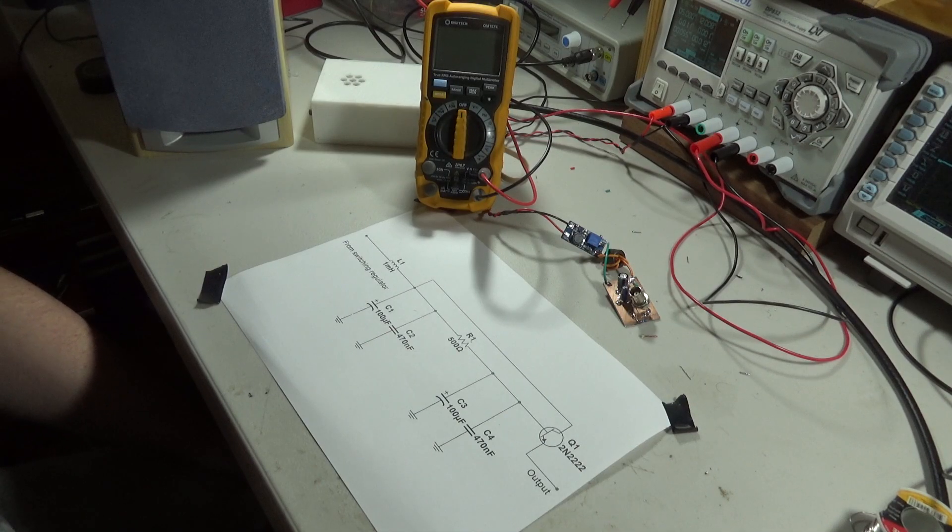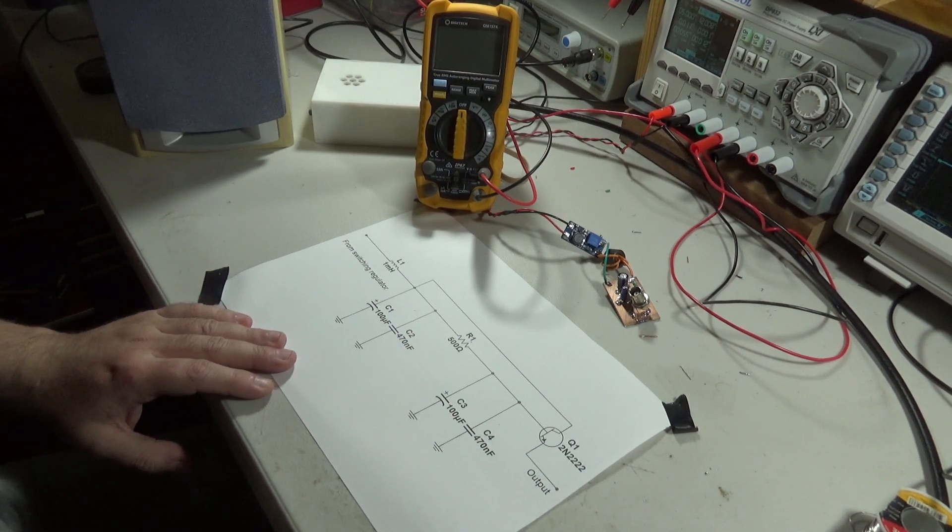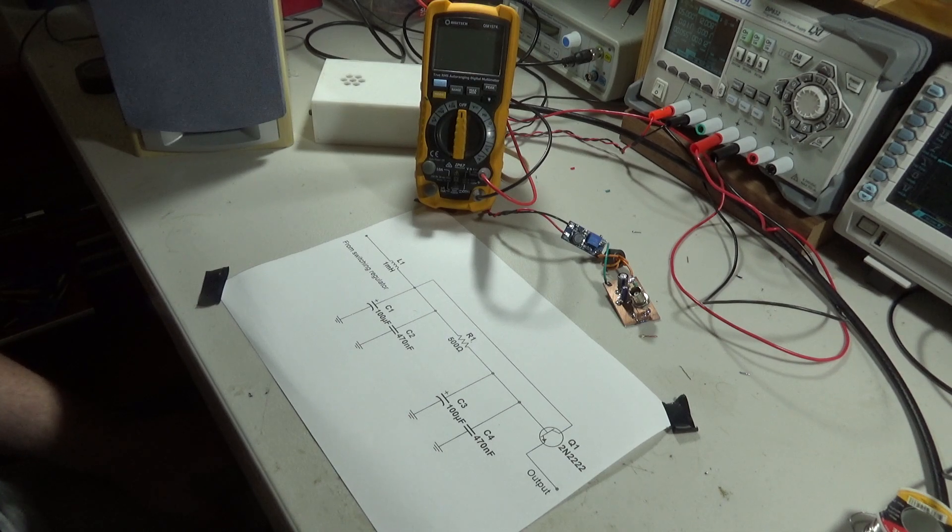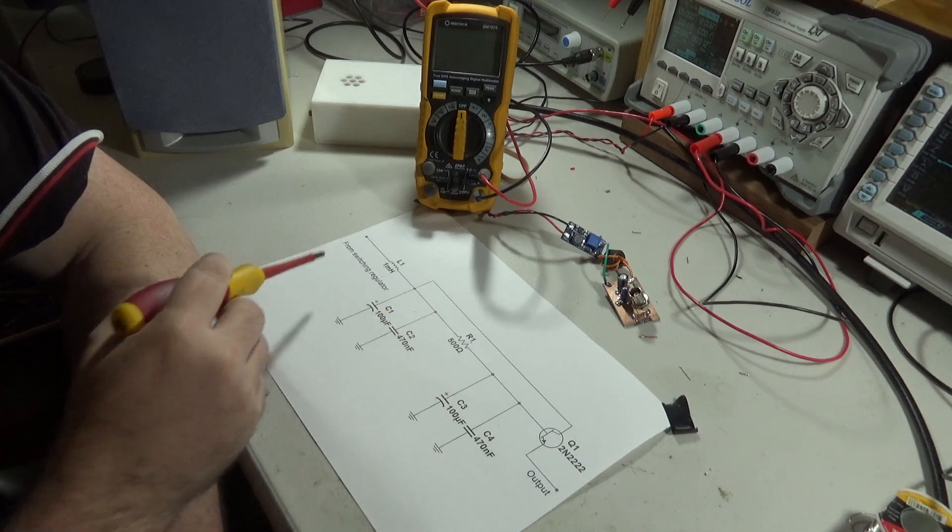So now we know what the problem is with the switching inverter let's look at how we're going to try and fix the problem. And the circuit that I'm going to try to use to filter the noise is this one here.